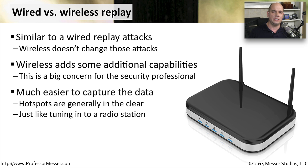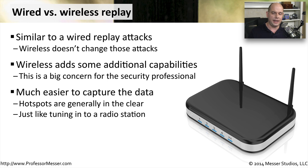It's obviously easy to capture this data, especially on something like a hotspot where all of the information is naturally in the clear. You're not doing any type of WEP or WPA encryption. You have to require the end user to provide their own VPN or other encryption mechanism to protect their data. And of course, not everybody on the wireless access point in these public areas is going to have that type of security in place.